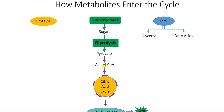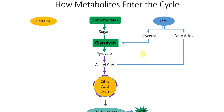What about fats? When we say fats in biochemistry, we're really saying triglyceride. When triglycerides are broken down, they're broken down into two parts: glycerol and fatty acids. The glycerol will actually enter into glycolysis and continue through the pathway of pyruvate and acetyl-CoA into the citric acid cycle. Fatty acids, on the other hand, will go through a process called beta-oxidation and will make acetyl-CoA, so they enter the citric acid cycle just via acetyl-CoA.